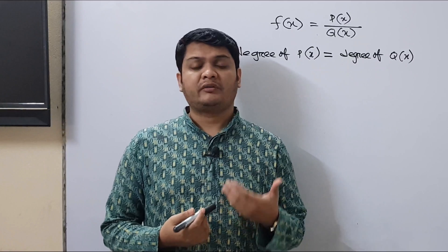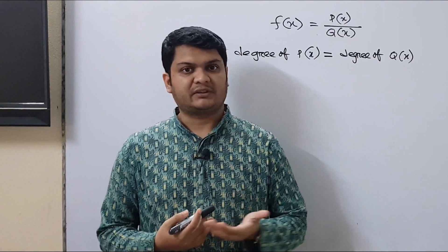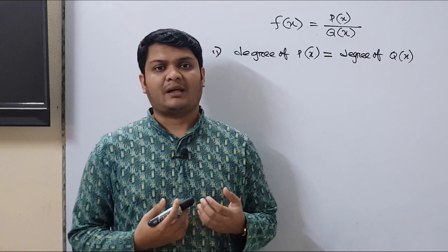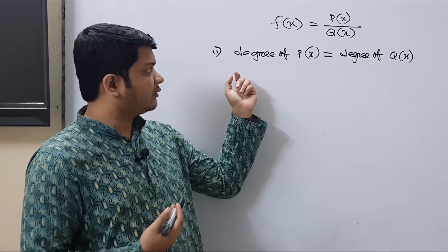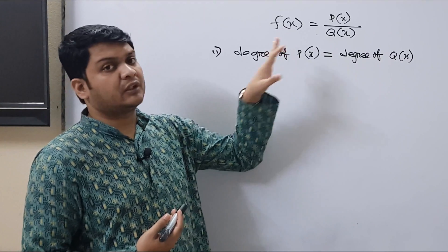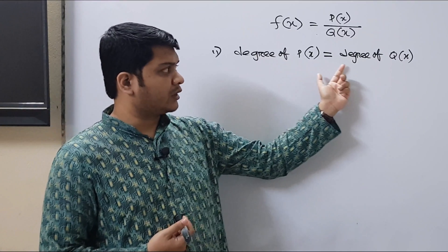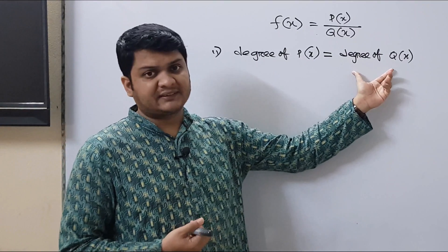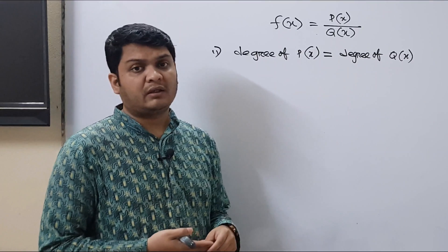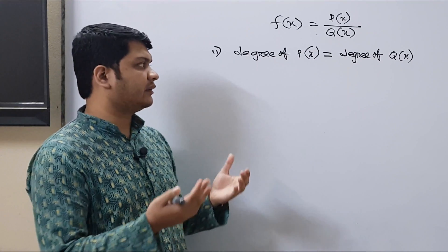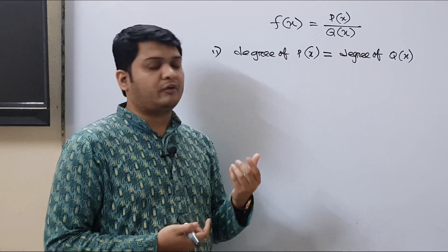In the previous video we already learned about the application of infinite limits in rational functions. In this video we will discuss Case 2: whenever in a rational function the degree of P(x) is equal to the degree of Q(x) — that is, the degree in the numerator and the degree in the denominator are equal — what will be the outcome of the infinite limit?